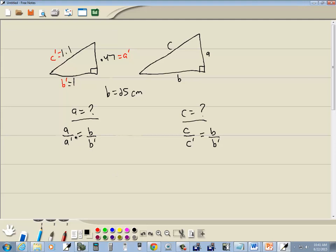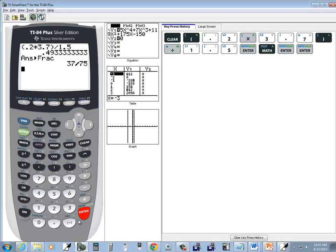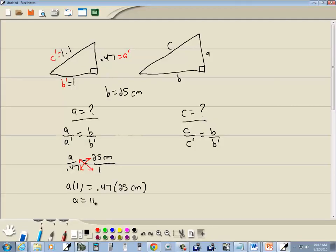Okay, so for this one here, A we don't know, what we're trying to find. Over A prime, well A prime was 0.47, equals B which is 25 centimeters over B prime which is 1. Okay, so we're going to cross multiply. We got a single fraction equals single fraction, so we'll cross multiply. We got A times 1 and we got 0.47 times 25 centimeters. A times 1 is A and 0.47 times 25 gives us 11.75 centimeters.